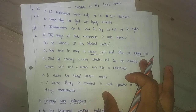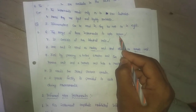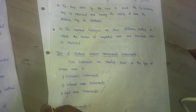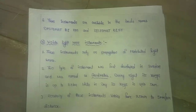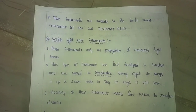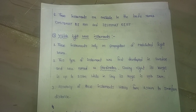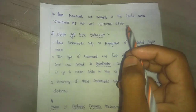Microwaves have a range of 100 kilometers, while infrared waves have a range of only three kilometers. Infrared wave instruments are available in the market under trade names such as Distomat DI-1000 and Distomat DI-55.